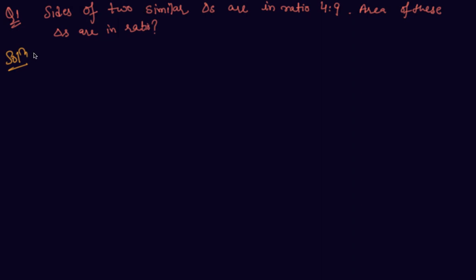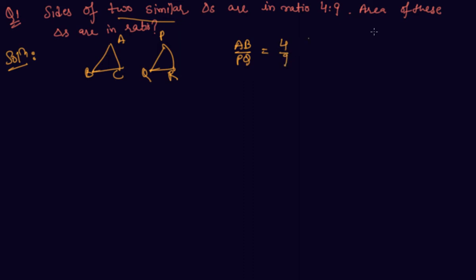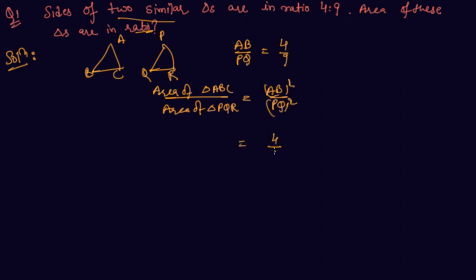So students, let us solve one question based on the area theorem. In this question we are given that sides of two similar triangles ABC and PQR are in a ratio — let us say AB to PQ is given. We have to find out the ratio of areas of these triangles. The theorem states that area of triangle ABC upon area of triangle PQR equals AB² upon PQ². So we simply square the given ratio to get the ratio of areas.